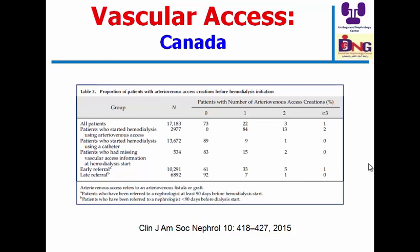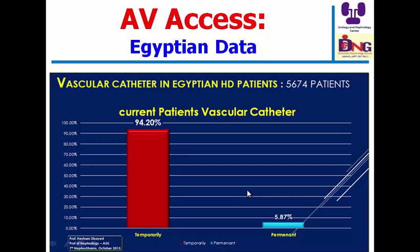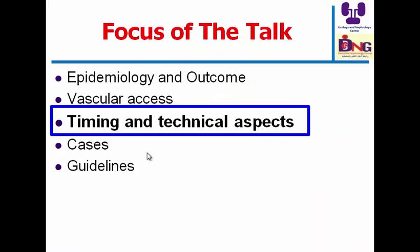In Canada, the data also shows a lack of fistula use at the time of dialysis initiation, even for patients referred to a nephrologist. Looking at data from Egypt collected by Ain Shams University including 22,000 patients, catheter is used in 25% of prevalent dialysis patients. Most importantly, temporary catheters are used in the majority of cases — 94% — which is one of the important problems to be addressed.